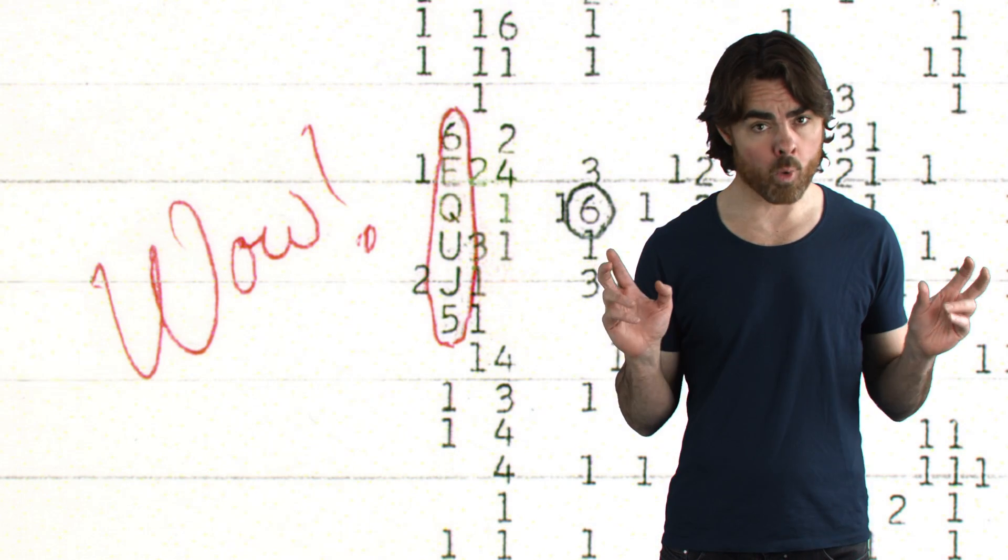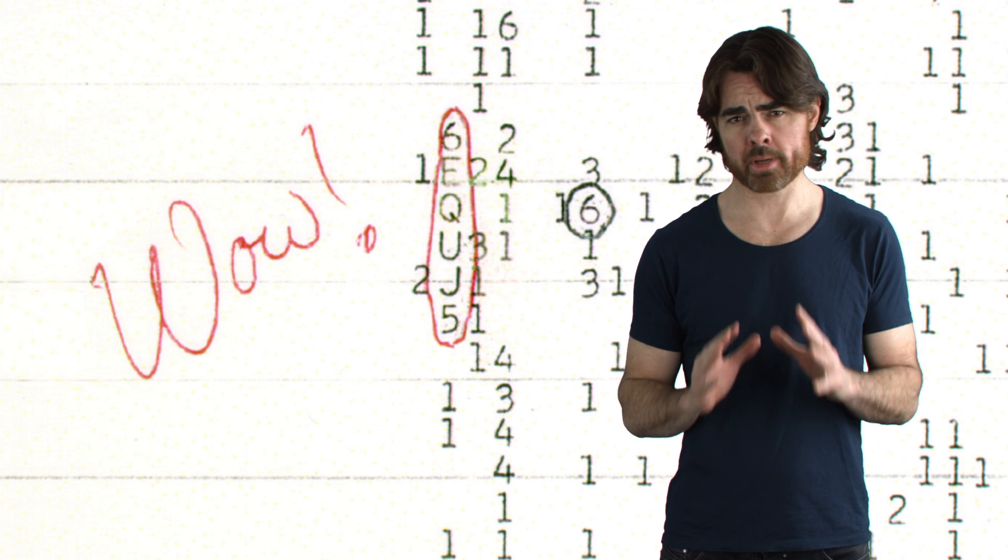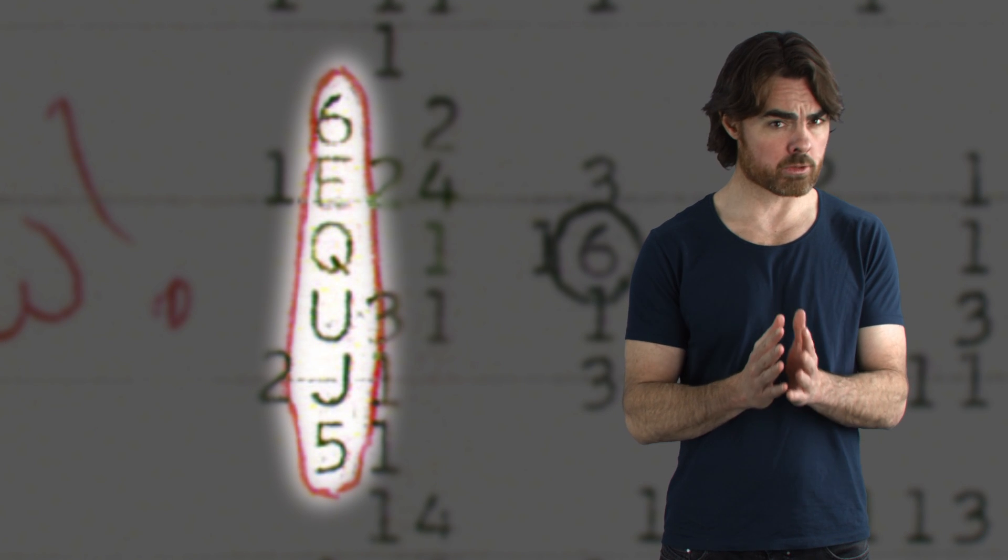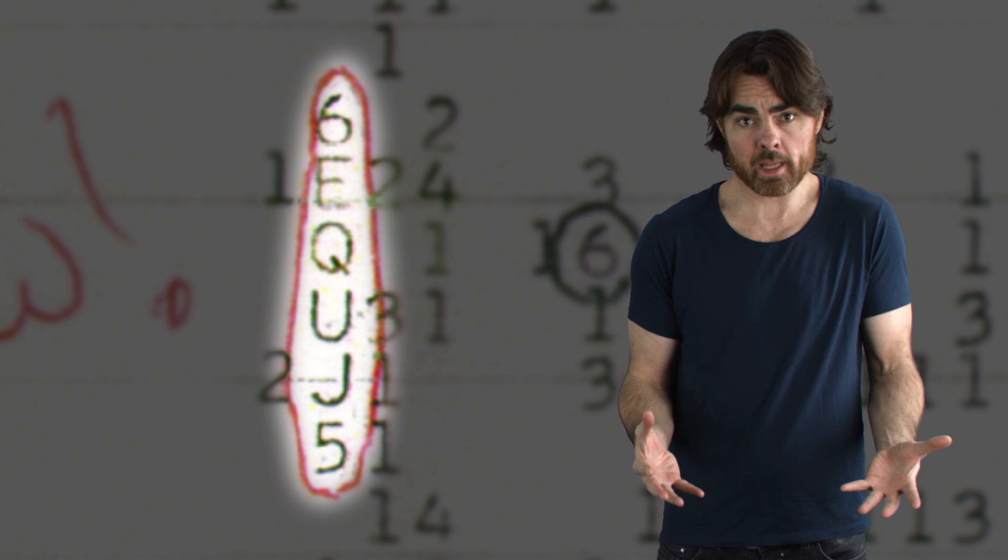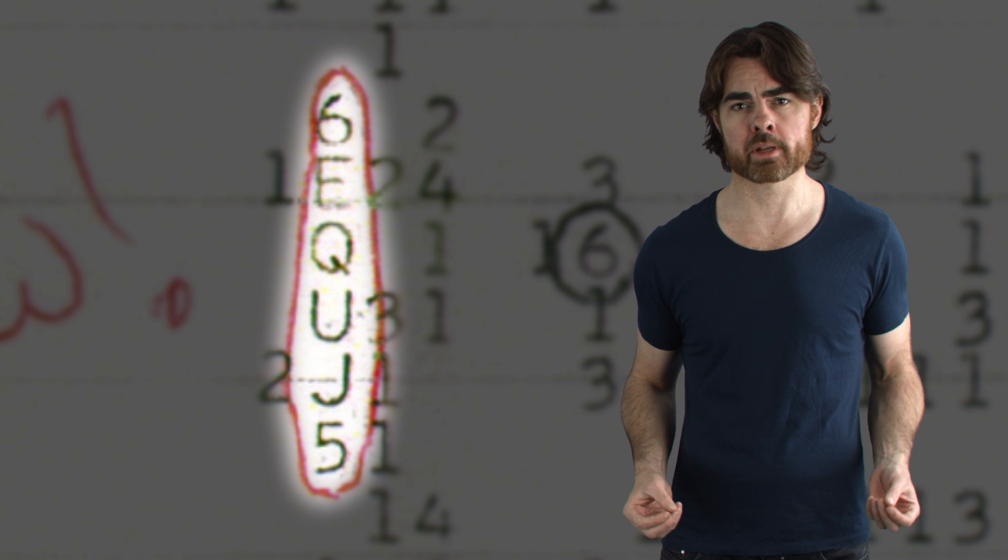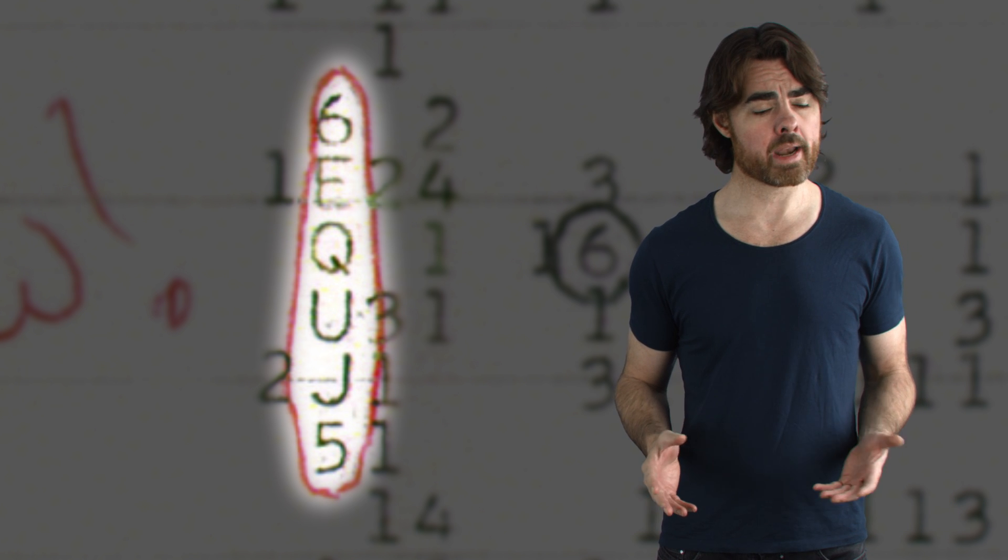The 1977 WOW signal is the most compelling. A narrow frequency radio blast detected in the waterhole that still has no broadly accepted natural explanation. But no one ever saw it again. Apparently, no one is trying particularly hard to get our attention. And it's important to understand that these searches could only have been successful if there were deliberate powerful beacons emitted by an alien civilization.